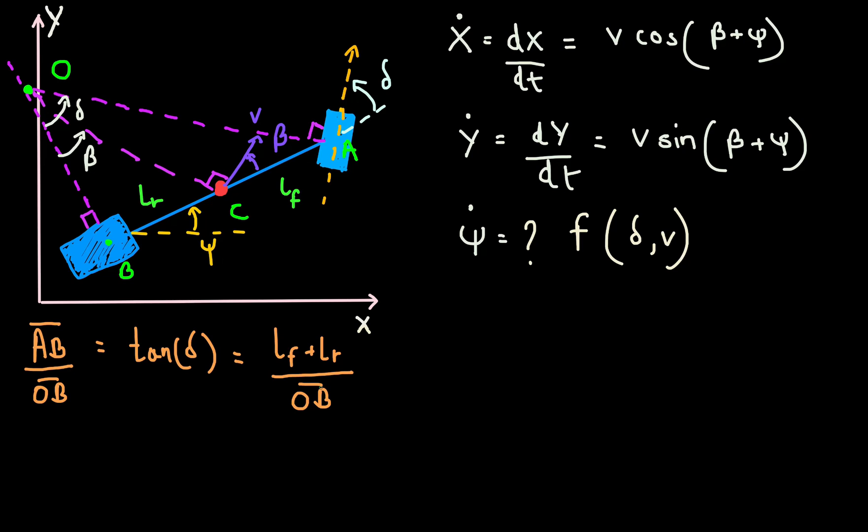Now let's not forget what we're trying to find out here. We're trying to find out psi dot. And it's the yaw rate of every point on the bicycle model. We also learned in the last lecture that the motion of any point on a rigid body can be expressed as a pure rotation about the instantaneous center of rotation. So the velocity of point C, which is the center of mass, will be its angular velocity times the distance to the center of rotation.